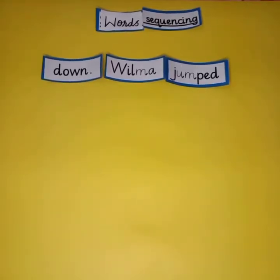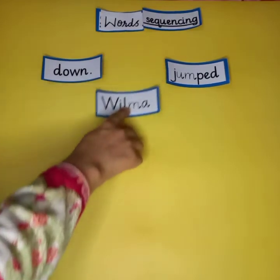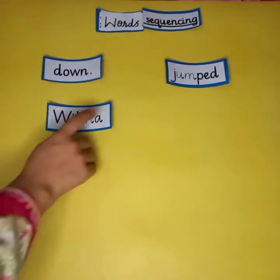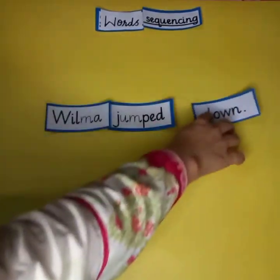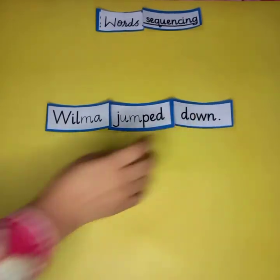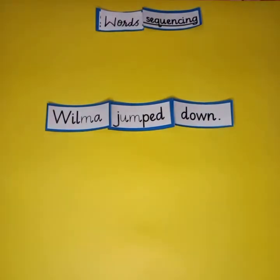This is the last example. Let's try it — will you be able to do it? The words are: 'down wilma jumped.' So we arrange: wilma jumped down. Very good! Wilma jumped down. Again, this is not a sentence from the reader, but you can practice with different sentences.